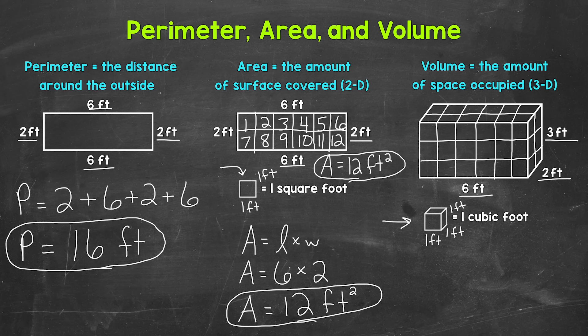Since this is 3D, we can't see all of the cubes — not all of them are visible. But we can still figure out how many cubes there are. Let's take a look at the bottom layer. We have six cubes going across and two cubes going back, so six by two gives us 12 cubes on the bottom layer. And then we have three layers: 12 cubes on each layer. So 12, 12, and 12 — or 12 times three — gives us 36 cubic feet.